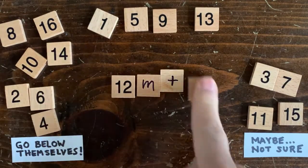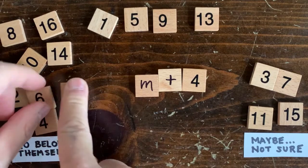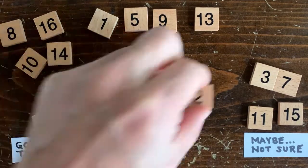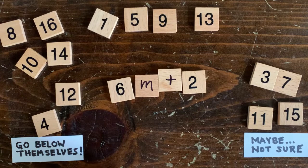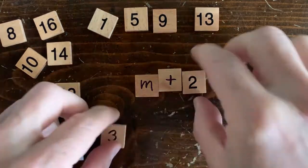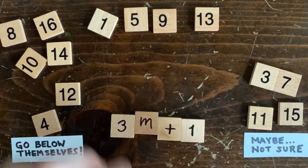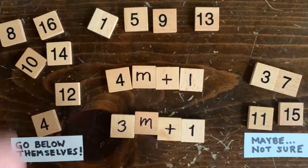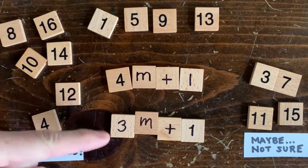Now that's an even number, so we simply cut it in half to 3m plus 1, and that's less than what we started with, 4m plus 1. So any odd number of the form 4m plus 1 goes below itself in just a couple of steps.